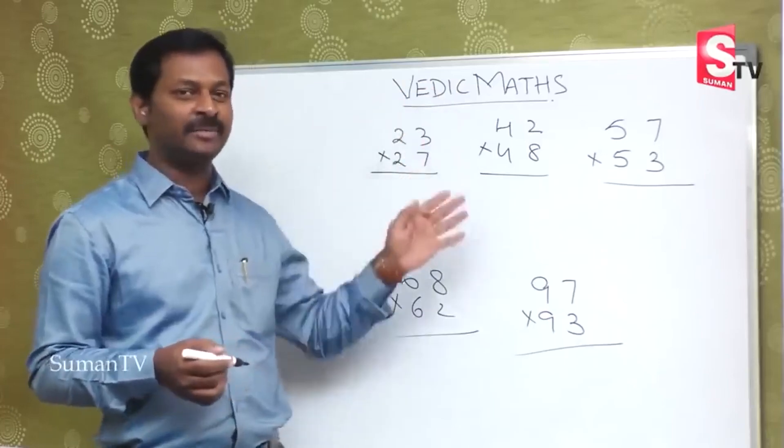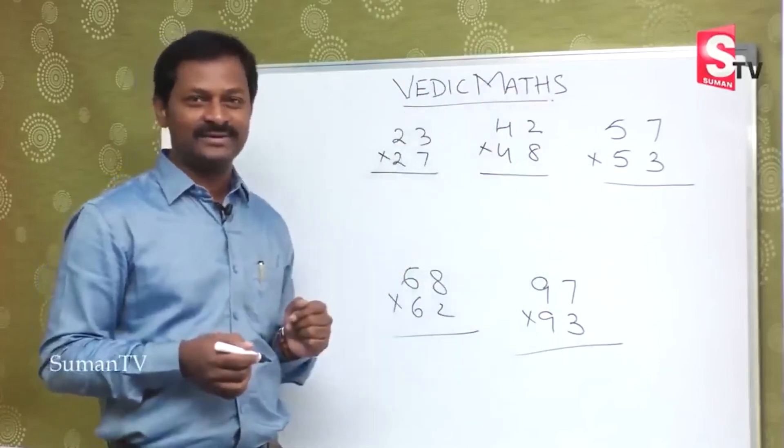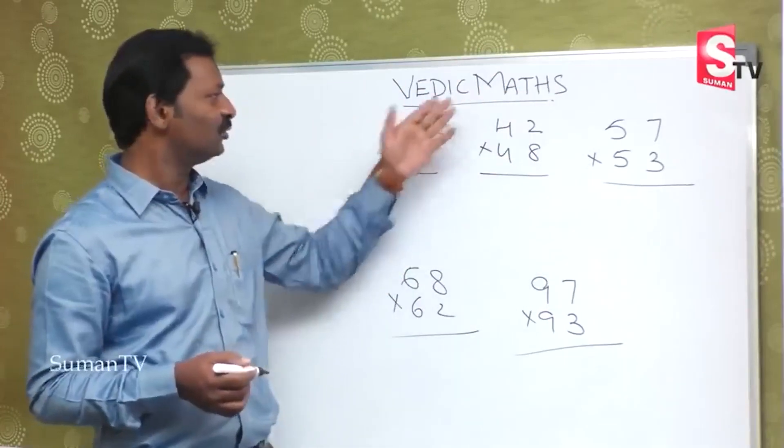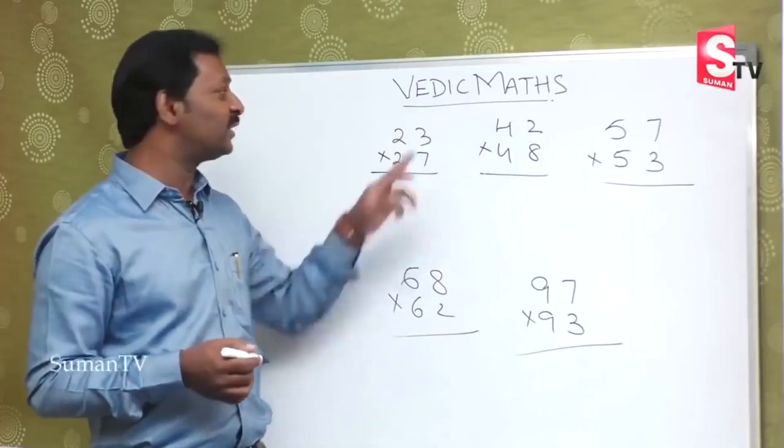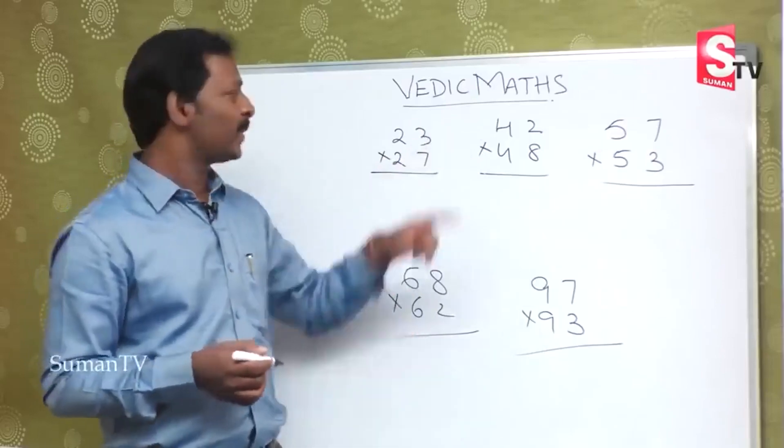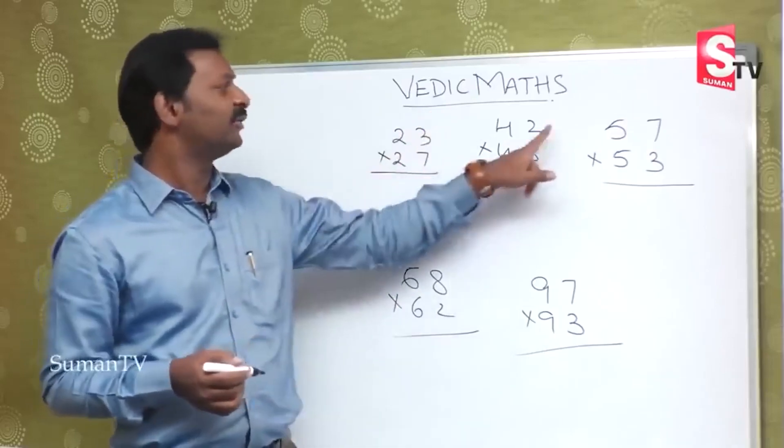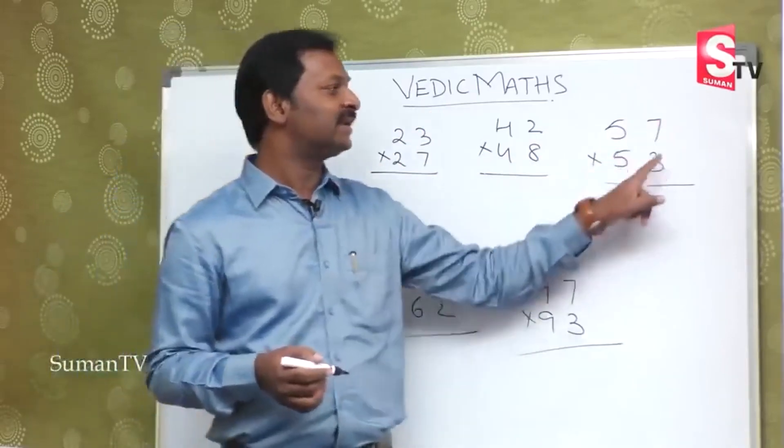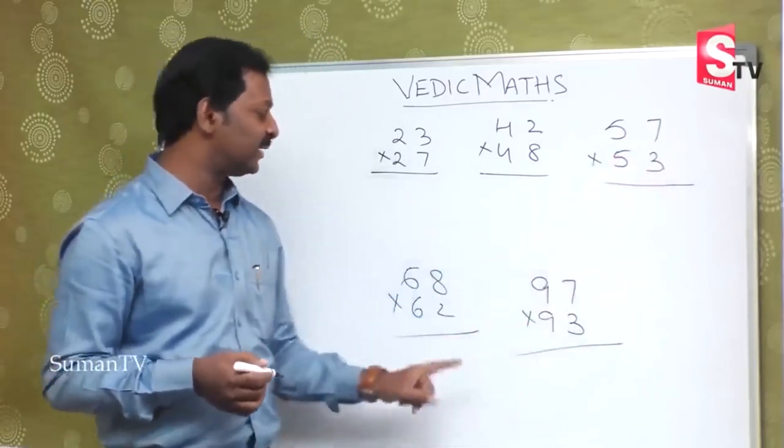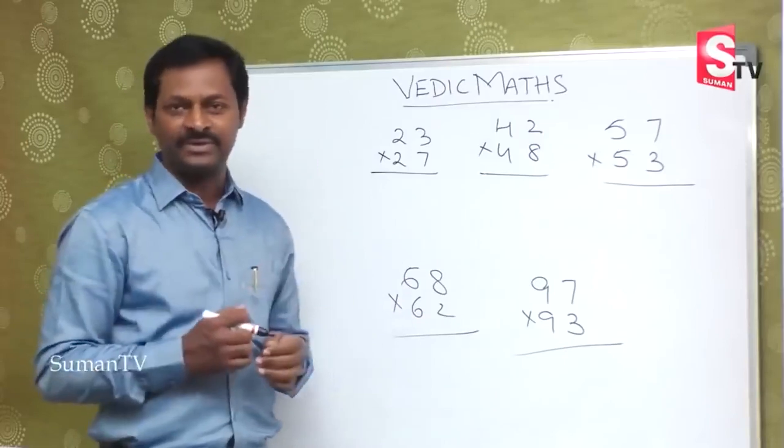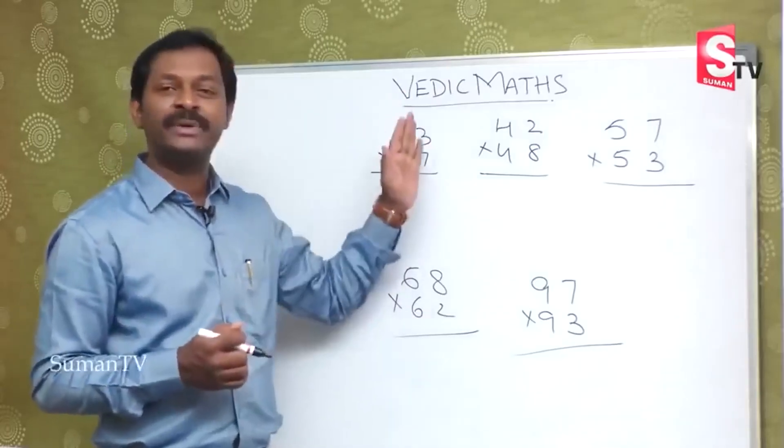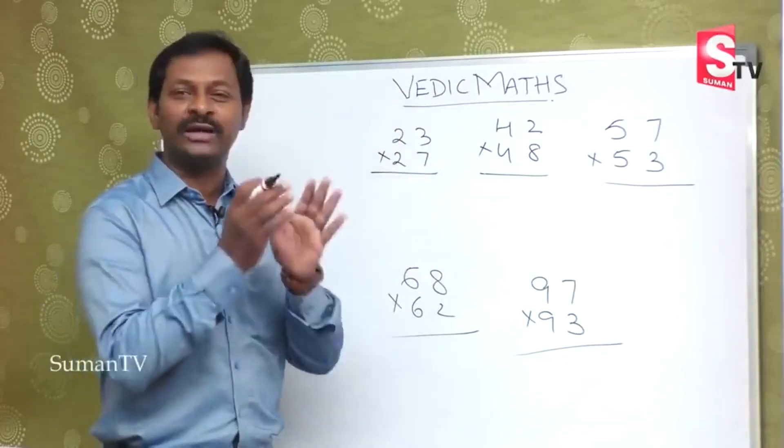There are two-two, four-four, five-five, nine-nine, and six-six. Units place are different numbers, but 3 plus 7 is 10, 2 plus 8 is 10, 5 plus 3 is 10, 7 plus 3 is 10, and 8 plus 2 is 10. Tens place same numbers, units place add to 10.